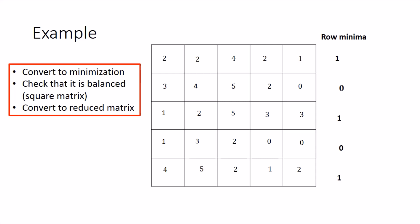After row subtraction, we get a matrix having at least one zero in each row. Now look at columns that don't have even one zero — the second and third columns are not having any zero entry. So we find their minima, which turn out to be 1 and 1 for the second and third columns respectively. After subtracting these column minima, we get a new reduced matrix in which each row and each column has at least one zero. Now we start the process of assignment.